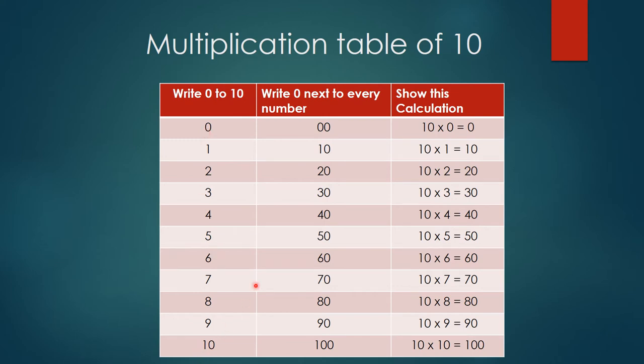Then tell them next to each number they have written in the first column, ask them to go on adding zeros. So there we go, we got the table of 10.